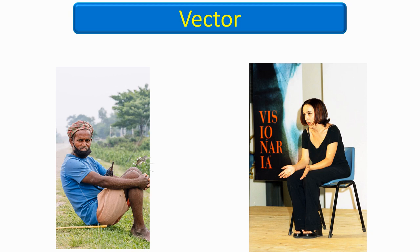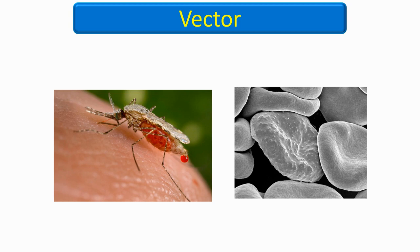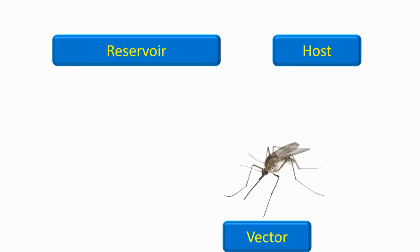In epidemiology, a disease vector is any living agent that carries and transmits an infectious pathogen to another living organism. The first major discovery of a disease vector came from Ronald Ross in 1897, who discovered the malaria pathogen when he dissected a mosquito. This image shows a red blood cell full of malaria pathogens.